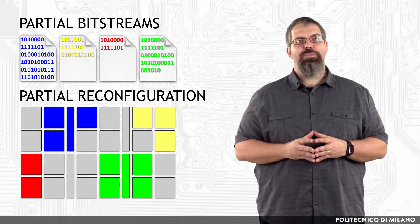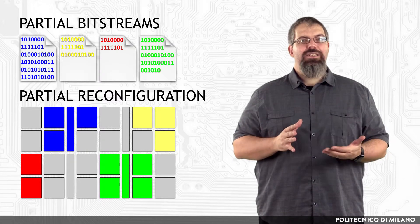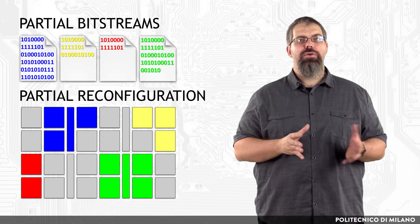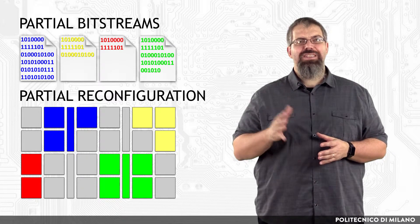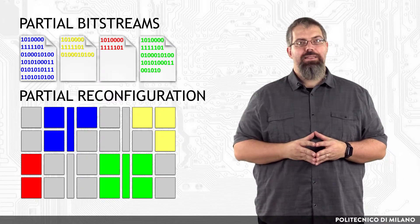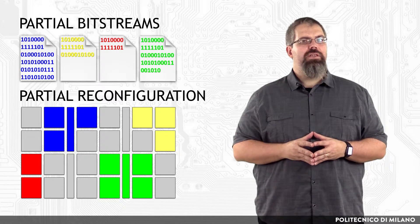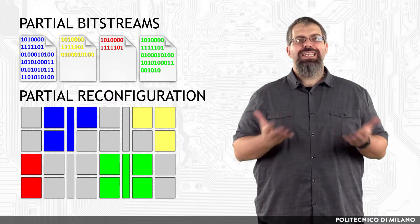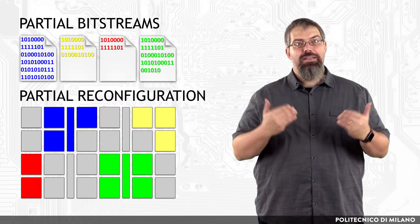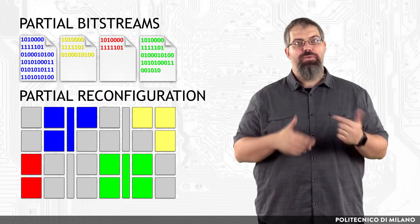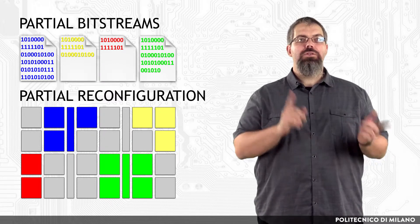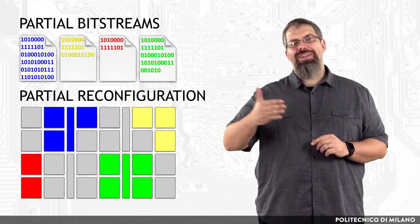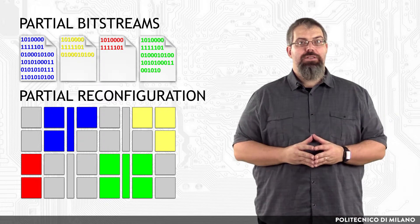For current FPGA devices, data is loaded on a column basis, with the smallest load unit being a configuration frame, which varies in size based on the target device. Partial reconfiguration of Virtex devices is based on the idea that instead of resetting the device and performing a complete reconfiguration, new data is loaded to reconfigure a specific area of the device, while the rest of the device will not be touched.